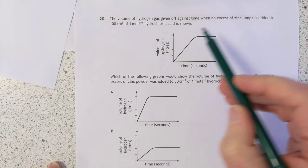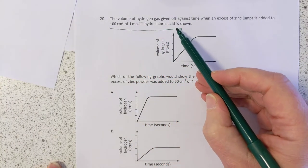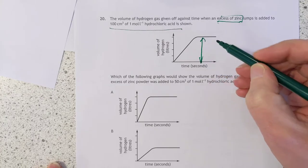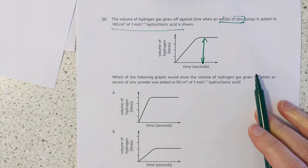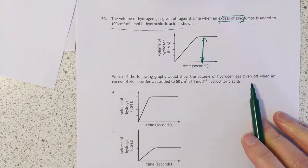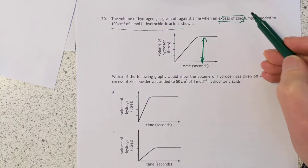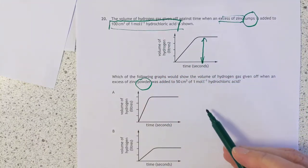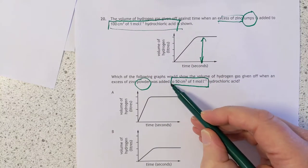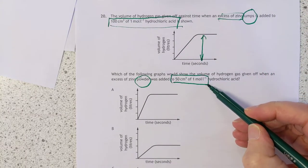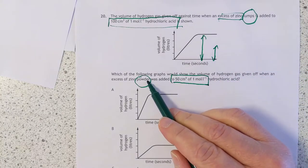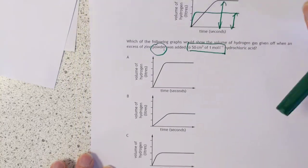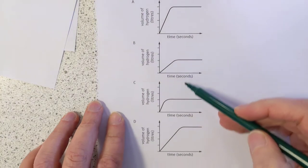Question 20: The volume of hydrogen gas given off against time with excess zinc lumps. That means the acid is your limiting chemical. So that determines when the reaction stops because the zinc is excess. This height here, this volume of hydrogen is controlled by the number of moles of acid. Which of the following graphs would show the volume when excess zinc powder was added? We had lumps here before, now we're on powder. And we had 100 mils of one mole per litre, now we've only got 50 mils of one mole per litre. Two different variables being changed at once. That's quite wicked. This one means you'll only go half as high up, and this variable means you'll get the gas produced much faster. So I'm looking for a graph that goes like this. It's the right height but a steeper slope.